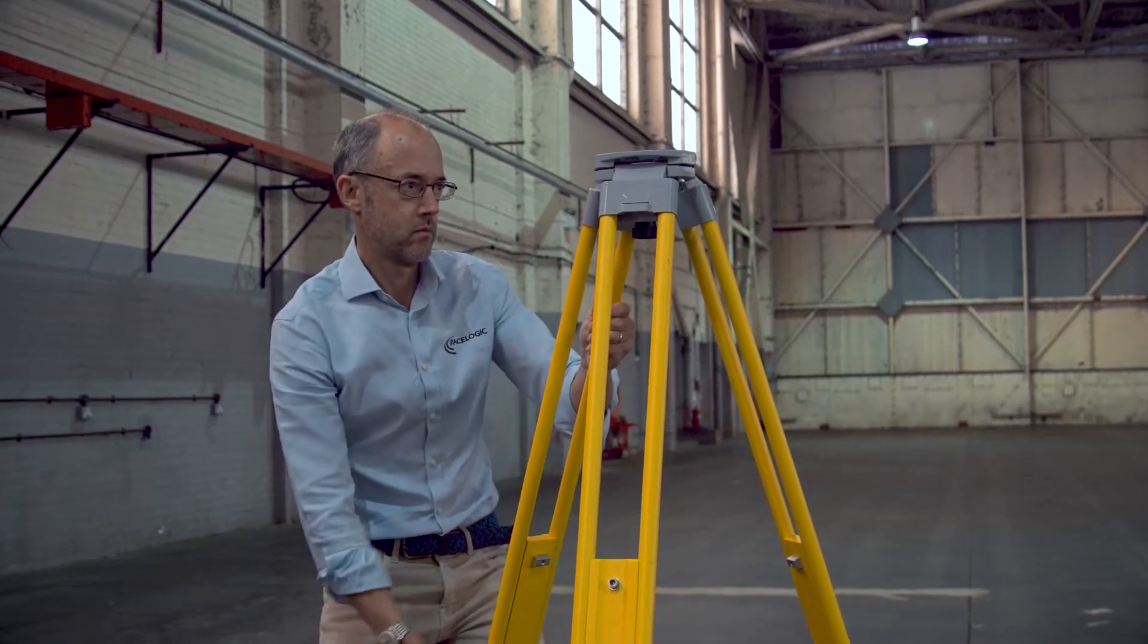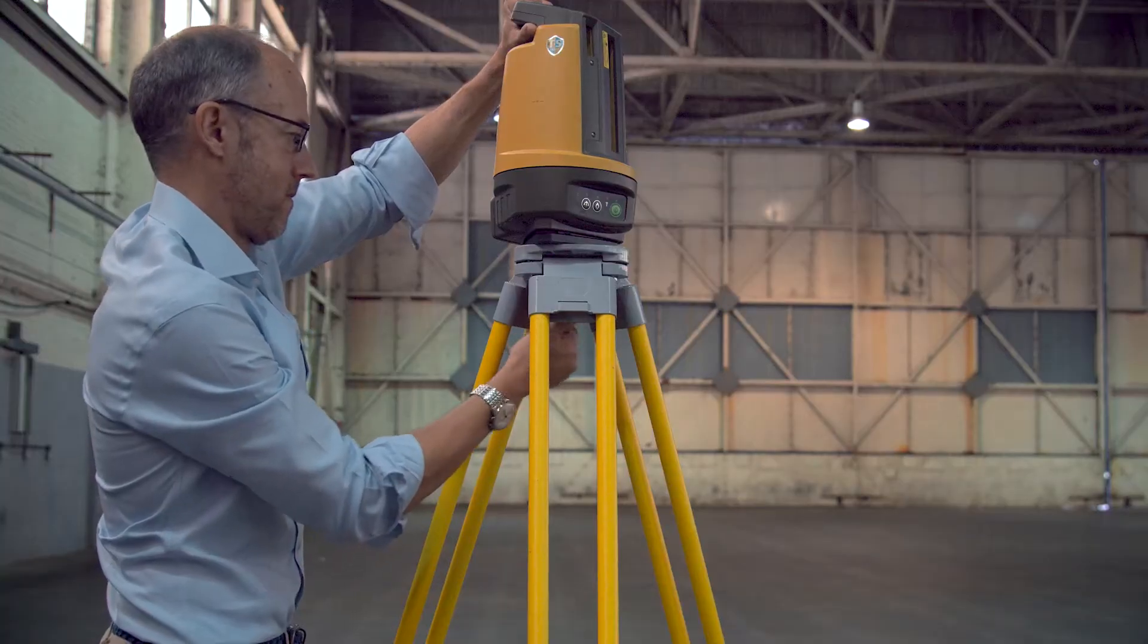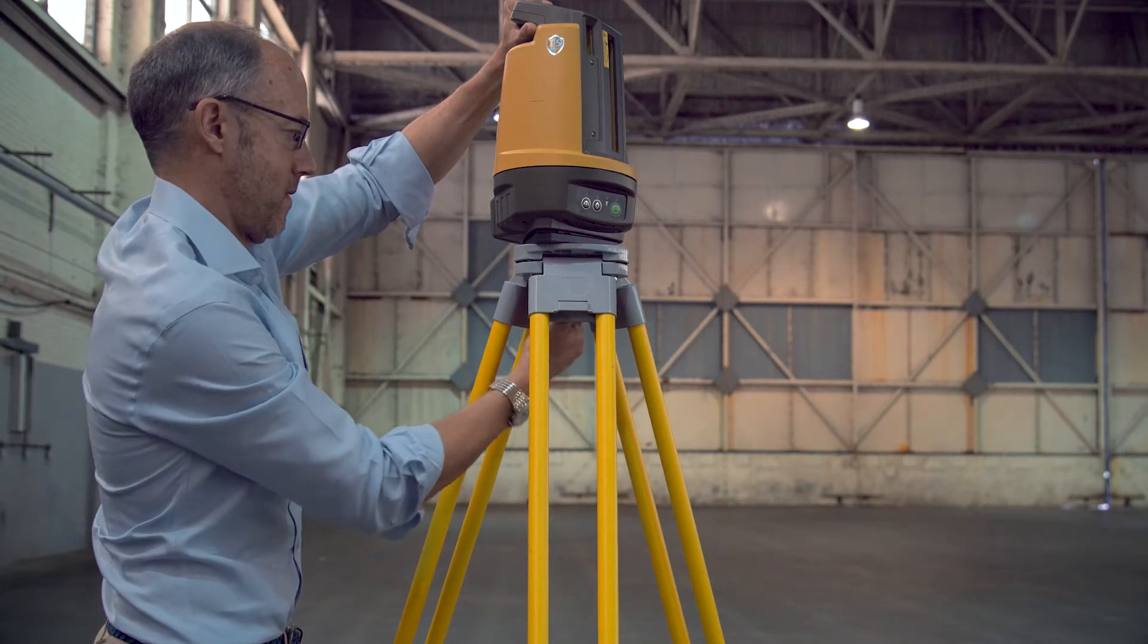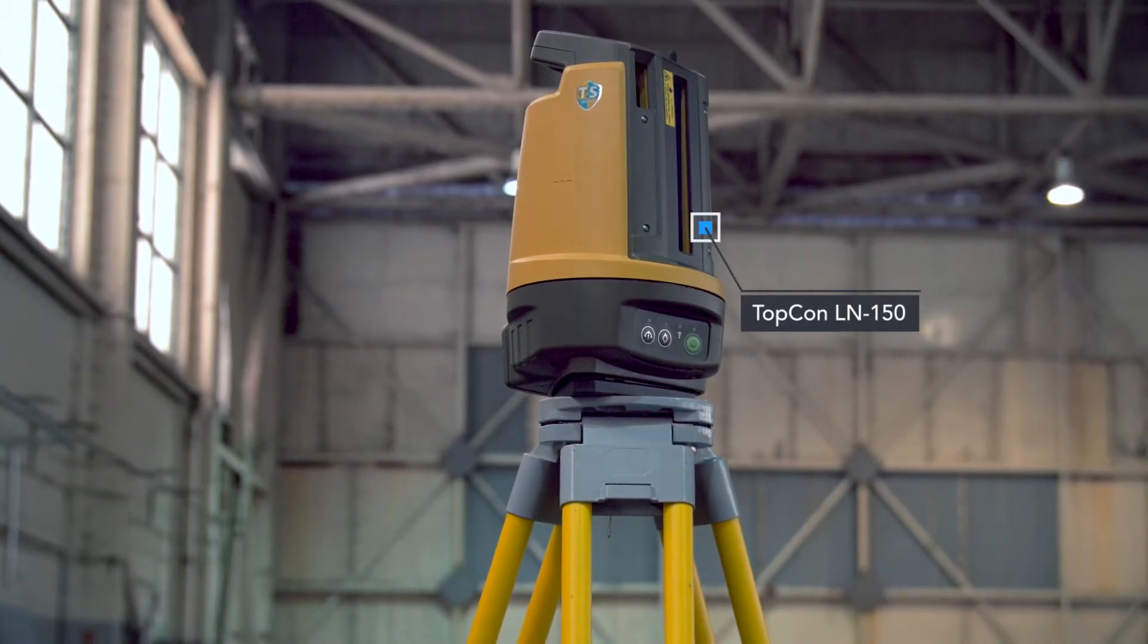When you first set up the Total Station, try and set the tripod platform roughly level. This doesn't have to be perfect, as when you first turn it on, it will go through an auto-leveling procedure, which takes about a minute.